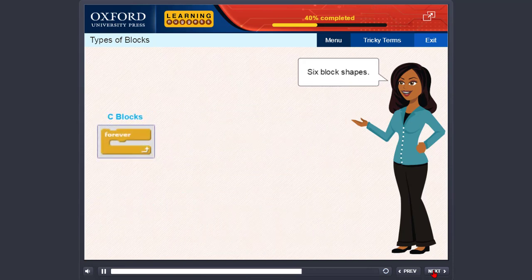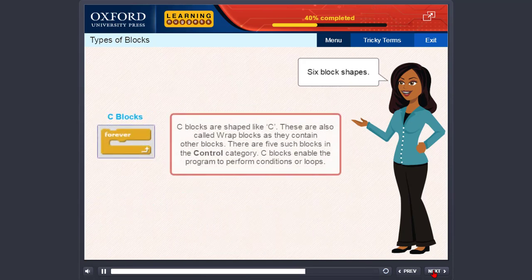C blocks. C blocks are shaped like C. These are also called wrap blocks as they contain other blocks.